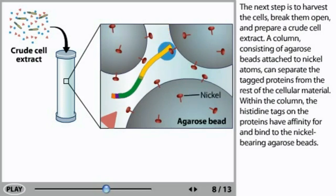Within the column, the histidine tags on the proteins have affinity for and bind to the nickel-bearing agarose beads.